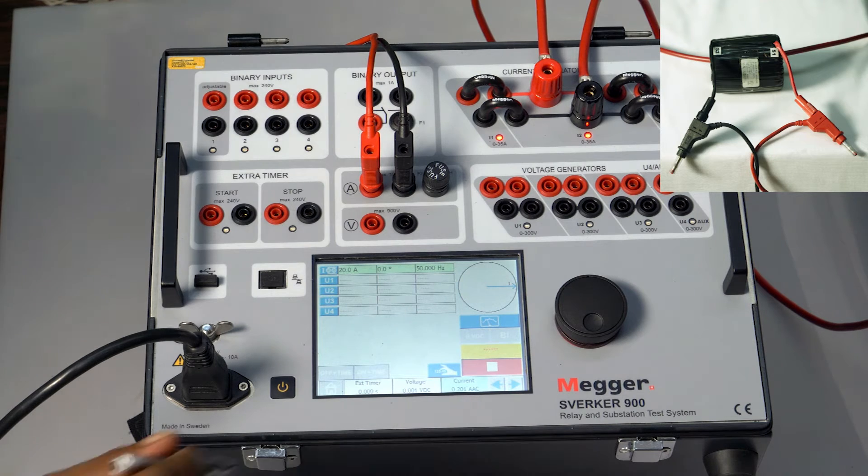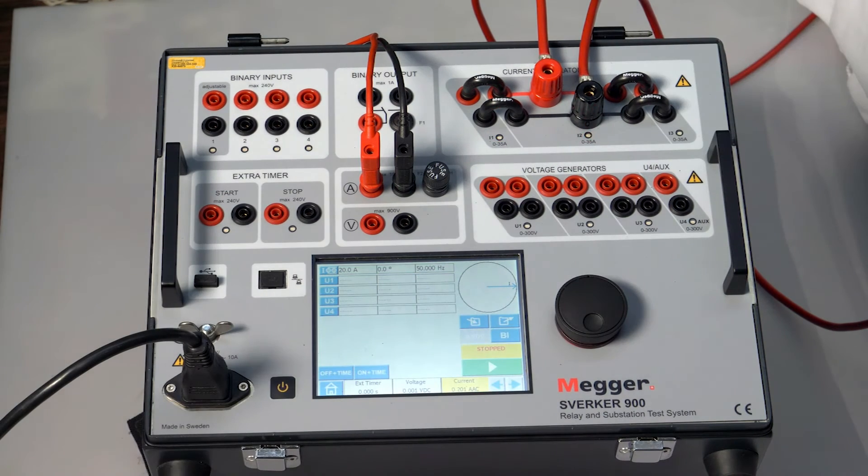And I will stop to note down the reading. The current is 0.201. Injected is 20 amps, 100:1 amps CT. Theoretically, the calculated value is 0.2. The measured value is 0.201.